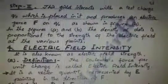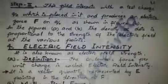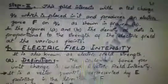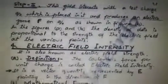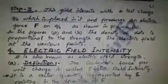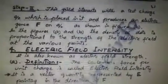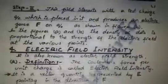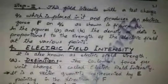In figure A and figure B, the density of the dots is proportional to the strength of the electric field at the various points. As you can see in figure A and B, the dots are proportional to the strength of the electric field at the various points.